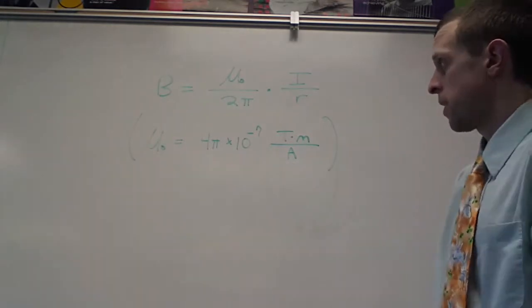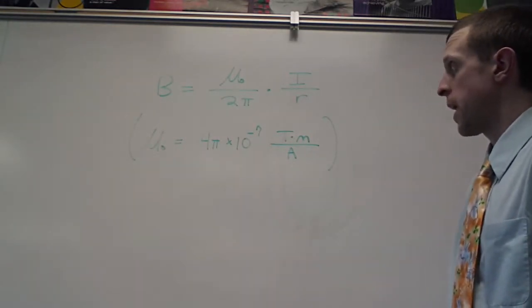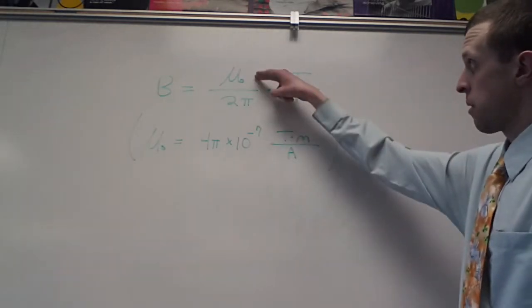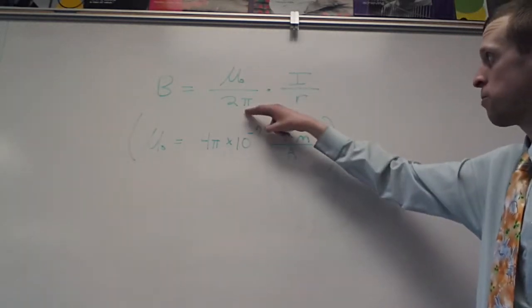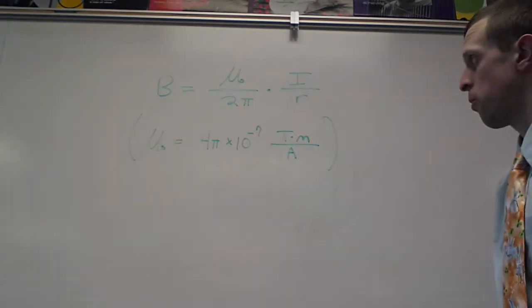And that value is four pi times ten to the negative seventh. The units are tesla meters per ampere. So it's that mu-naught vacuum permeability divided by two pi times the current divided by the distance from the wire.